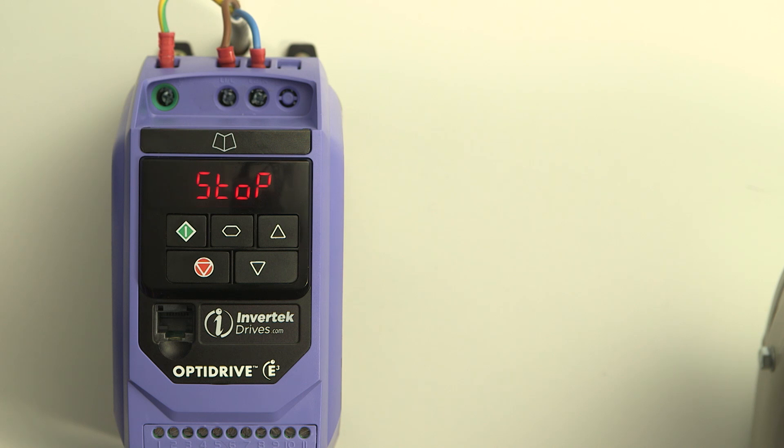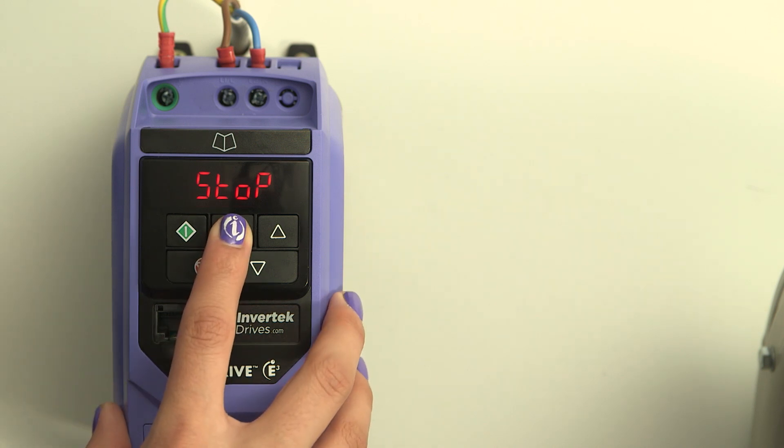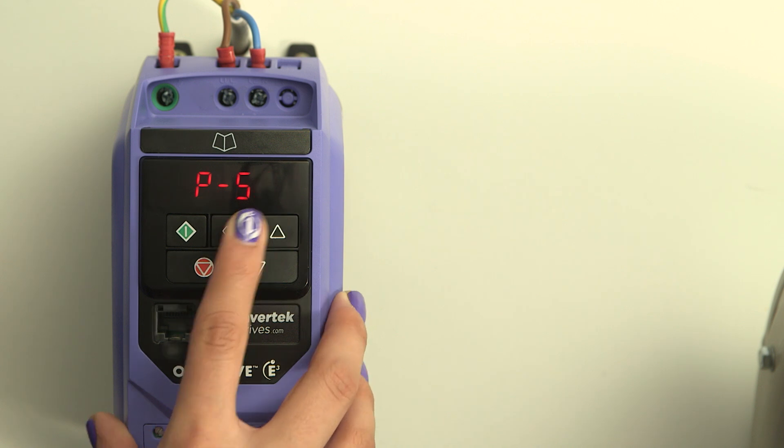If necessary, you can improve the stability and performance of the system by adjusting the gain of the vector control using parameter 53.